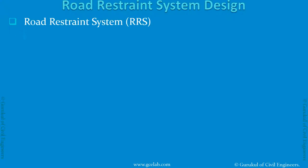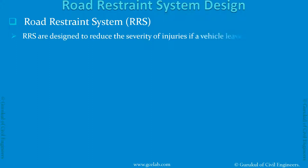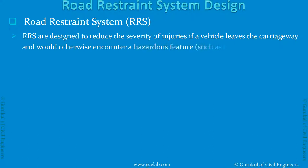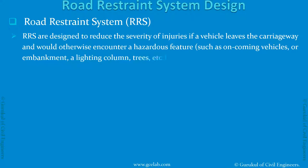Road Restraint Systems are designed to reduce the severity of injuries if a vehicle leaves the carriageway and would otherwise encounter a hazardous feature, such as an oncoming vehicle, an embankment, a lighting column, or a tree, etc.